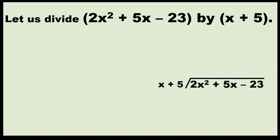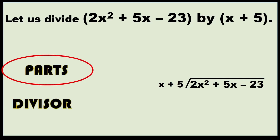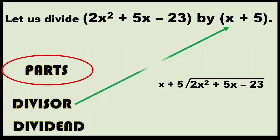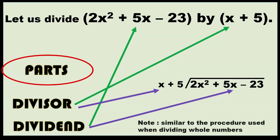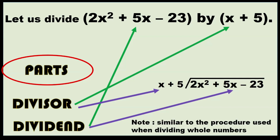So let us divide 2x squared plus 5x minus 23 by x plus 5. First, we're going to identify the parts: the divisor and the dividend. The divisor is x plus 5 and the dividend is 2x squared plus 5x minus 23. Note that if we are going to divide polynomials, it is similar to the procedure used when dividing whole numbers.